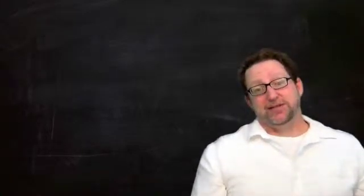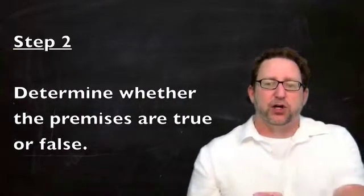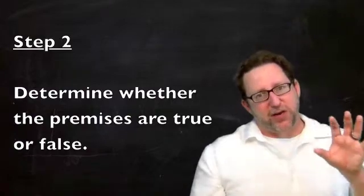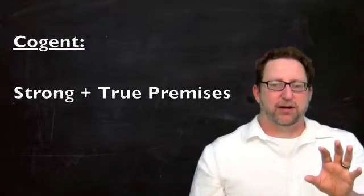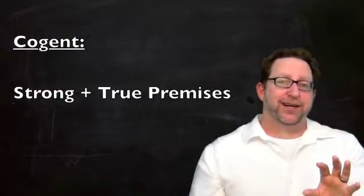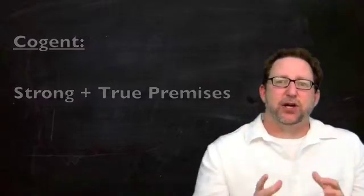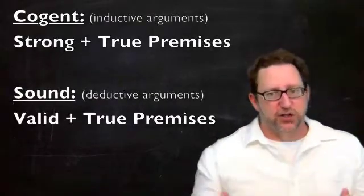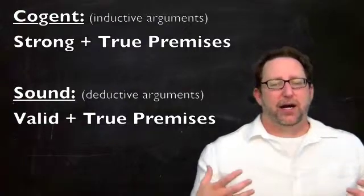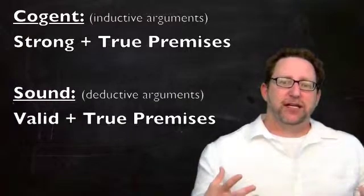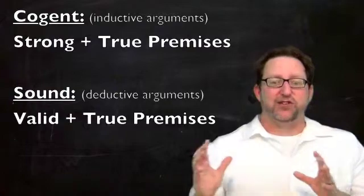The second step is to ask this question: are the premises actually true? If we have a strong argument and we also have true premises, then we say that the argument is cogent. A cogent argument is sort of the analog of our deductively sound argument. Inductive arguments that are good are cogent. Deductive arguments that are good are sound. A cogent argument is an argument that's strong, which means the inferential claim is a good one, and has true premises.